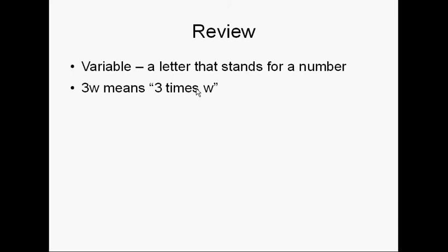So if w was 5, we would say 3 times 5. If w was 27, we'd say 3 times 27. If w was 3,946,910.7, we'd say 3 times that big long number. That's what 3w means.